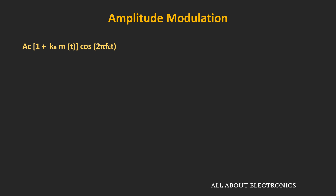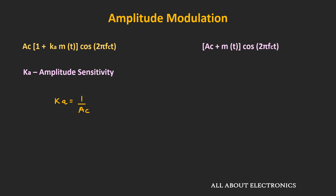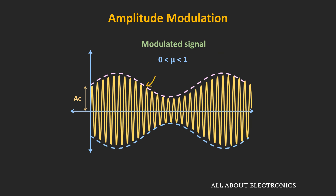This is the generalized expression of the AM signal, where Ka is the amplitude sensitivity. For simplicity, if we assume that Ka is equal to 1 over Ac, then the expression of the AM signal simplifies to Ac plus m(t) times cos(ωc·t). Here, Ac plus m(t) is the envelope signal, where m(t) is the message signal and Ac is the amplitude of the carrier signal.